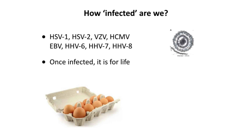How infected are you? I guarantee that each of you has at least two herpes viruses. We have herpes simplex type 1 — the cold sore virus — type 2, varicella zoster virus, human cytomegalovirus, Epstein-Barr virus causing mononucleosis, and HHV human herpes virus 6, 7, and 8. So you all have at least two. This is based on population studies done in many parts of the world.